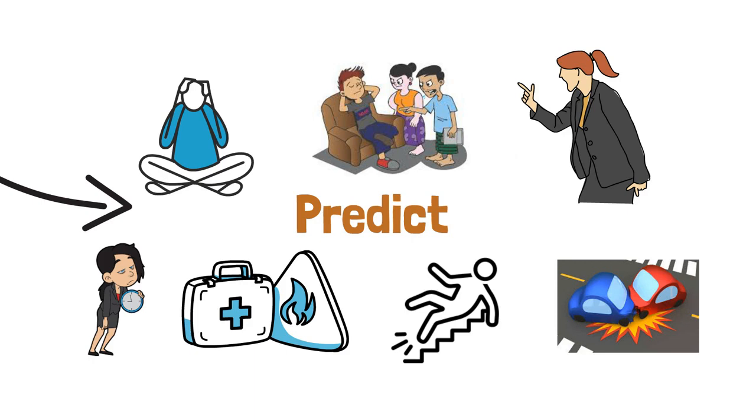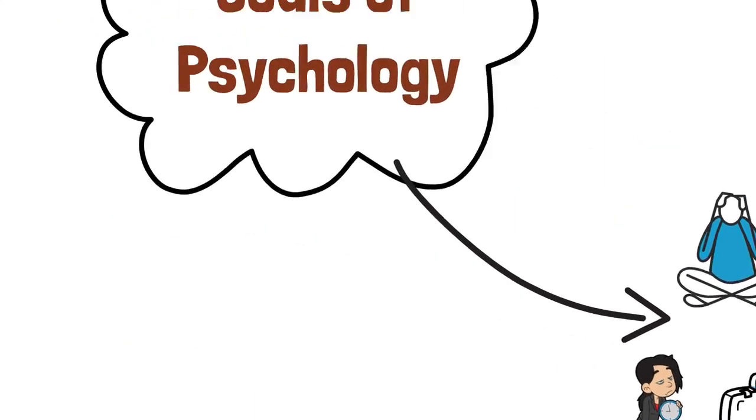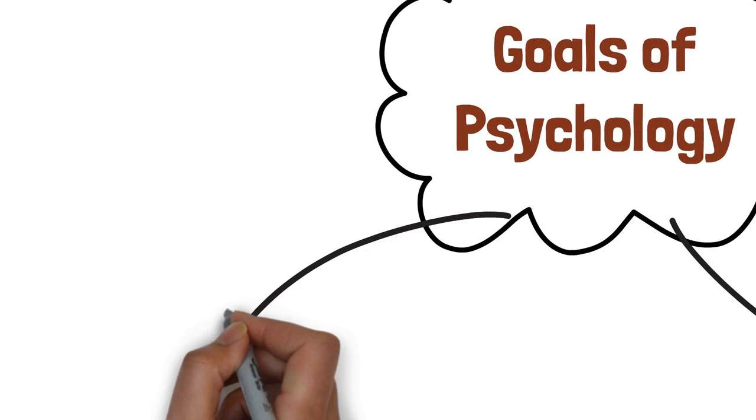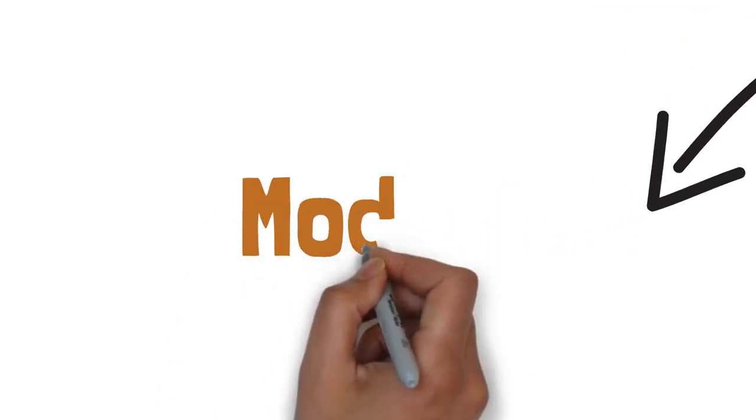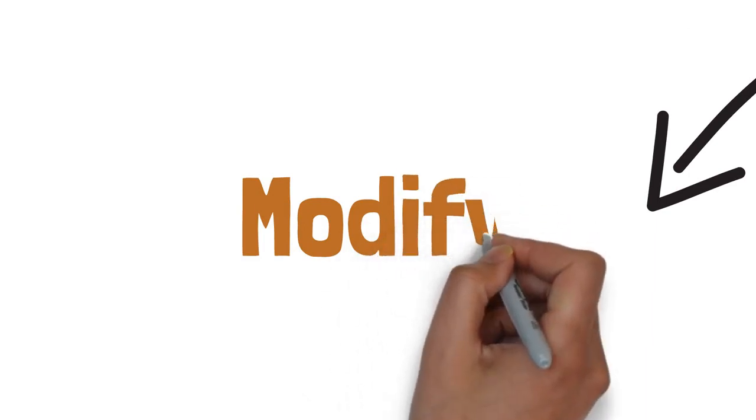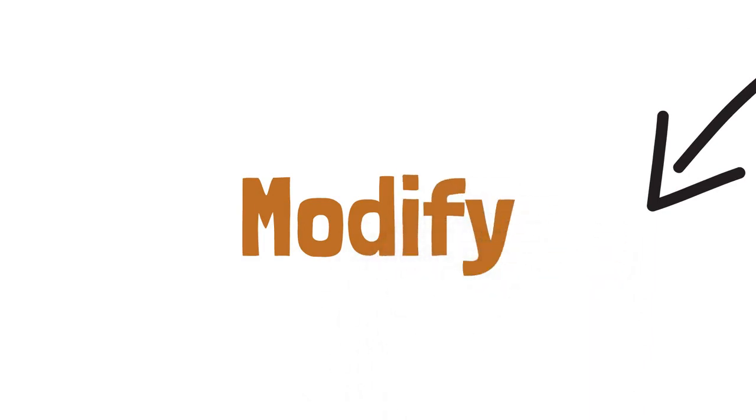One major goal of psychology is to bring changes, changes to the betterment of a person's life. Just understanding what happens, why it happens, and what may happen without having any control over behavior is not beneficial.